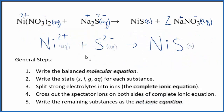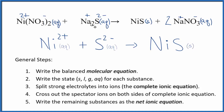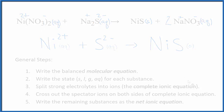This is the balanced net ionic equation for nickel 2 nitrate plus sodium sulfide. Note that charge is conserved: we have 2+ and 2-, giving a net charge of 0 on the reactant side. On the product side, NiS is a neutral compound with a net charge of 0. The atoms are balanced as well. This is Dr. B with Ni(NO3)2 plus Na2S. Thanks for watching.